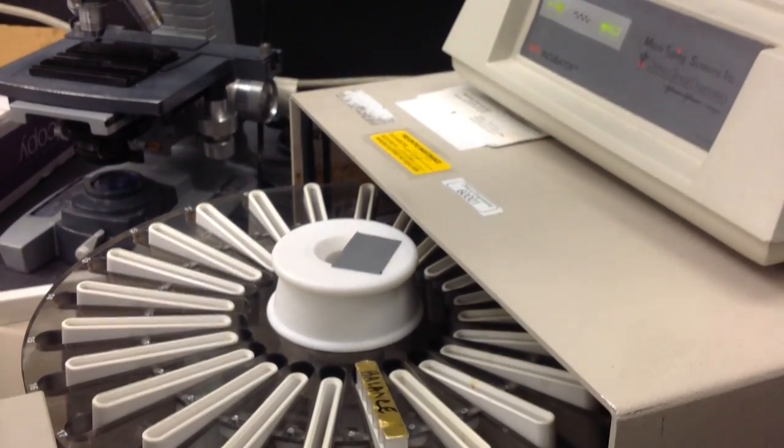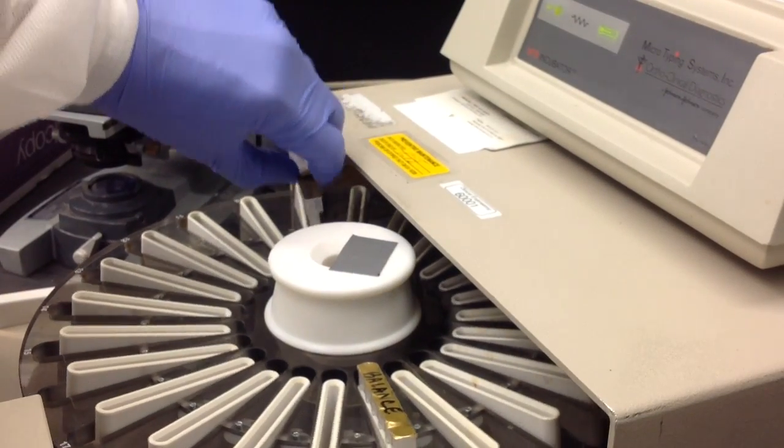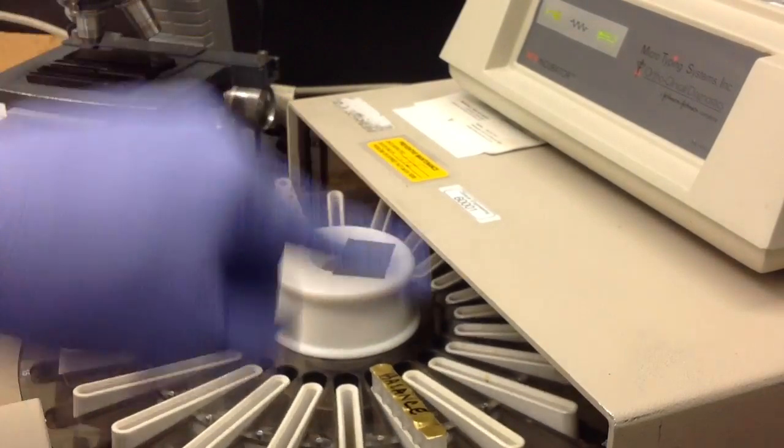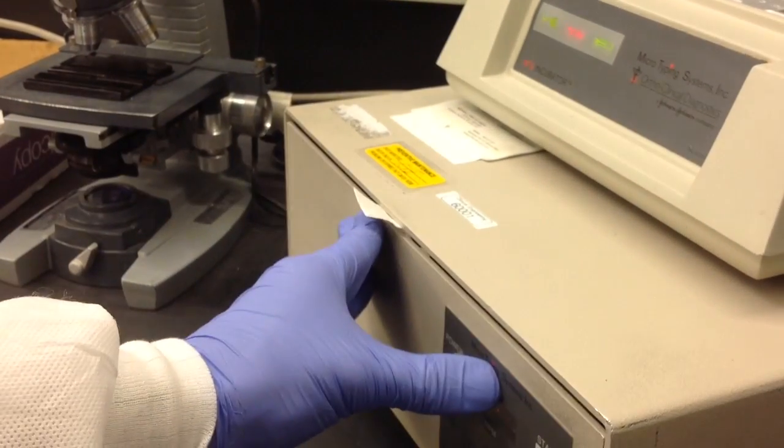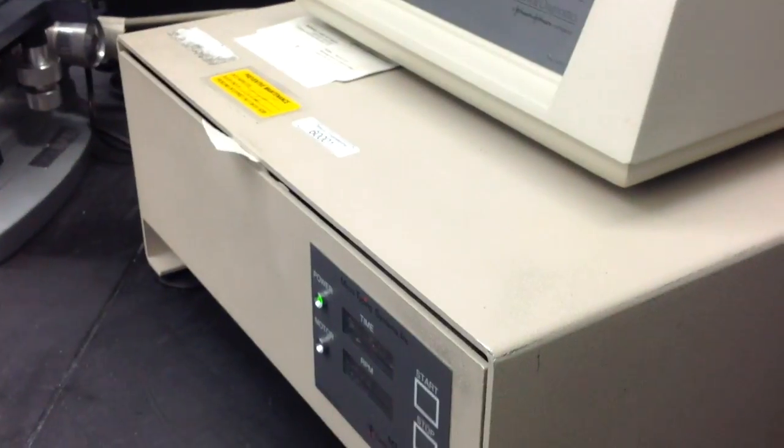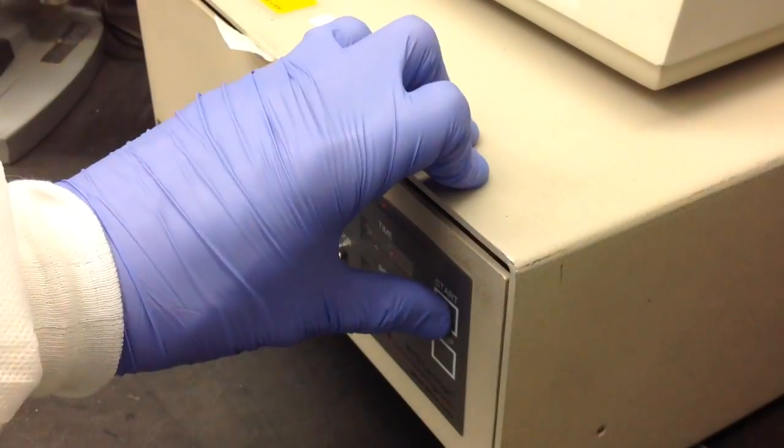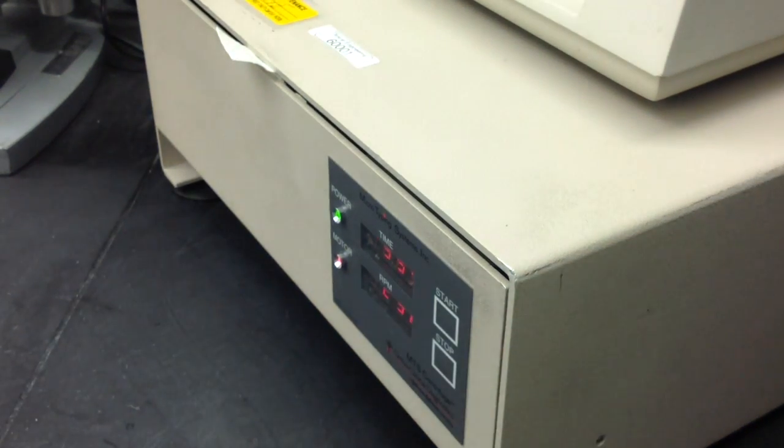Now it's important to make sure that you properly balance the centrifuge like all others. Usually you just have to sacrifice a gel card. This is going to run for 10 minutes and then after that we'll be able to read our reactions.